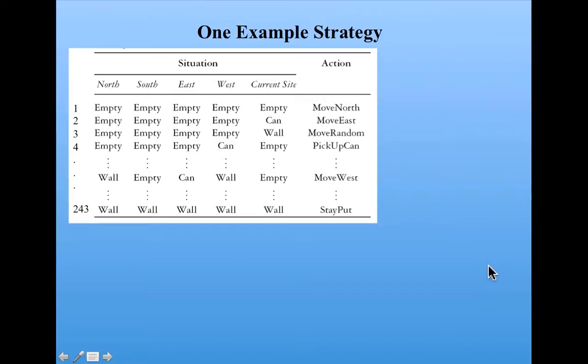So here's an example of a strategy. Here I've—well, I'm not going to list all 243 situations, but I could have the computer do that systematically. And I filled in a random action that I've chosen randomly for each of those situations.